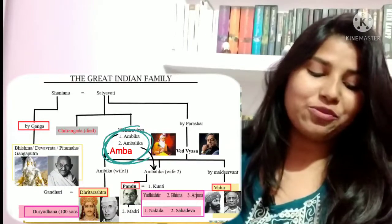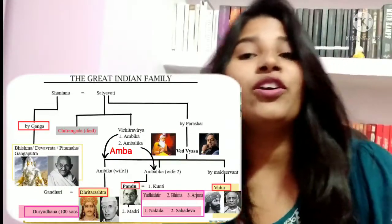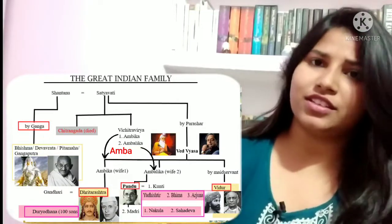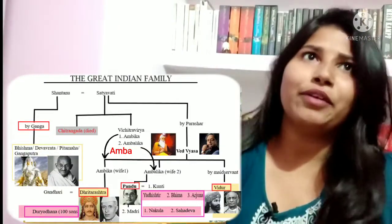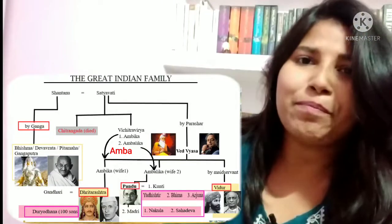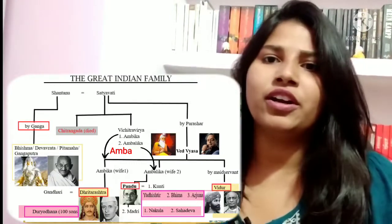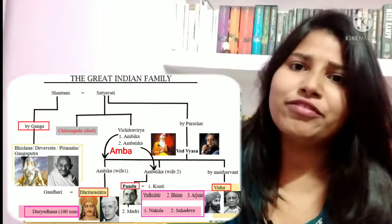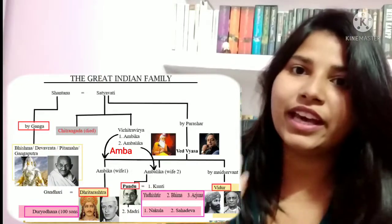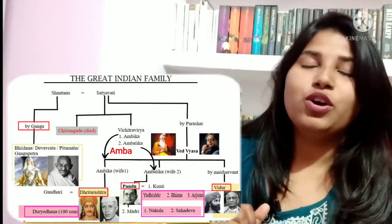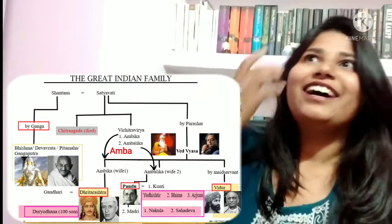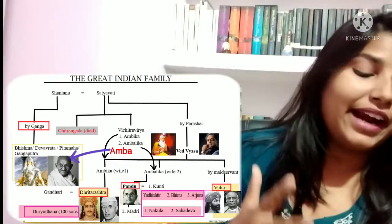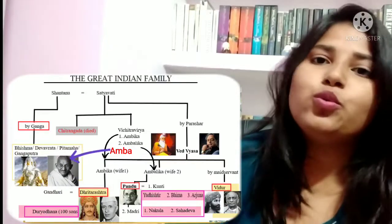However, Amba was already in love with Raja Shaili, so Vichitravarya discarded her, saying her heart was not pure. When she went to Raja Shaili, he also rejected her, saying she had been captured. Amba then went to Gangadat saying that because of him she had no father's home, no Vichitravarya's home, and no Raja Shaili's home, demanding he marry her.